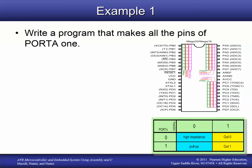Starting with an example: we want to write a program that makes all of the pins of Port A high — so we want five volts output to all the pins of Port A. We can see here these are pins 33 to 40, and we want five volts on all of these, relative to ground.